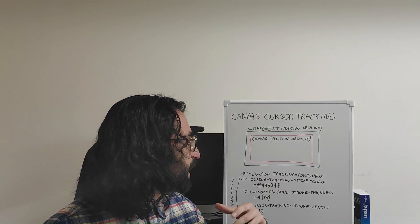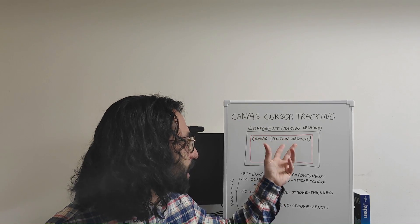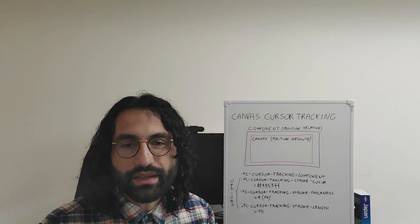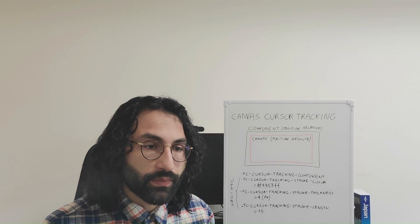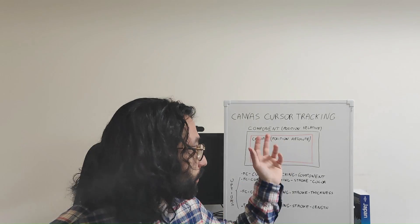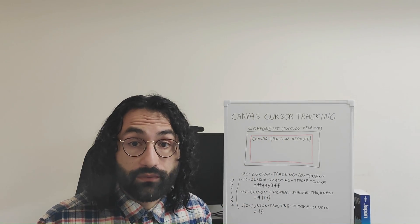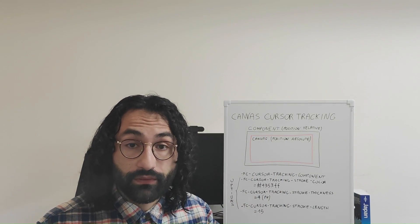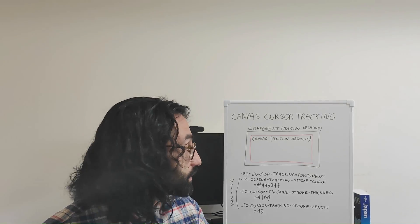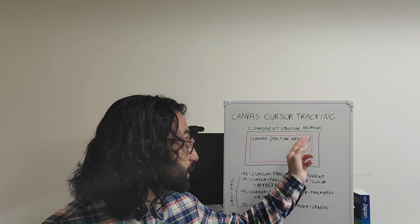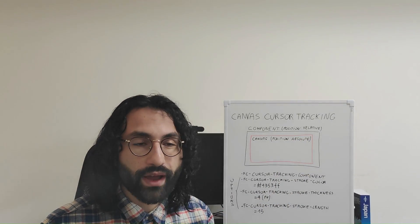Let's take a look at the whiteboard. The setup here is very, very simple. We just need an element — it could be a section, a container, a div block — that will be our component, that is, the element that will host the canvas cursor tracking effect. The only required property here is that its position needs to be set to relative, and we will understand why in a moment.